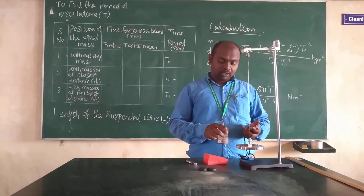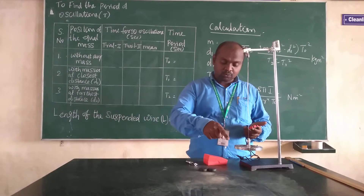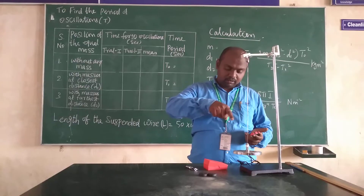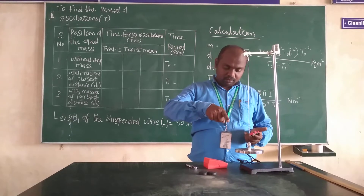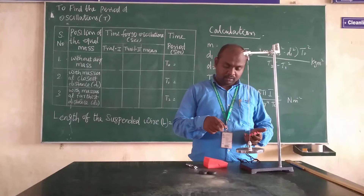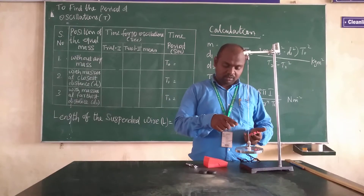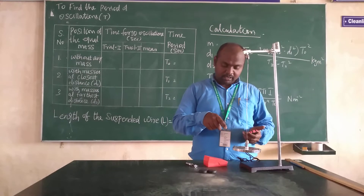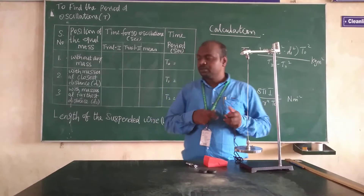Let us start this experiment. We start the stopwatch at the chosen turning point and count ten oscillations: one, two, three, four, five, six, seven, eight, nine, ten. The stopwatch shows 41 seconds. This time we have to note down in the observation table.